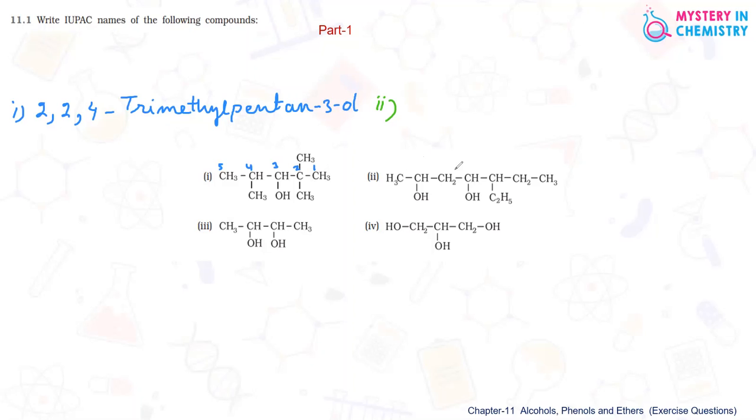After that numbering it in such a way so that the carbon containing OH group should get least number. So numbering is starting from 1, 2, 3, 4, 5, 6 and this is 7th, heptane.